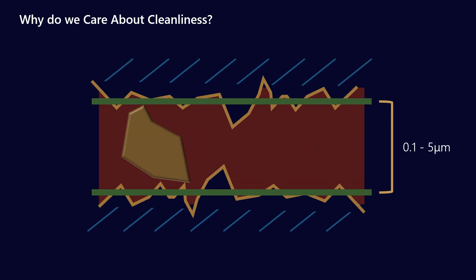But what about soft particles? If you imagine some sludge passing through your system — when it reaches a point where the flow is occluded, it can actually just morph its shape and continue to pass through. So soft particles such as sludge, air, water, or even particles which are designed to be in the lubricant like silicon-based additives, these aren't a concern from an equipment damage perspective. That's why we want to remove them from the count.